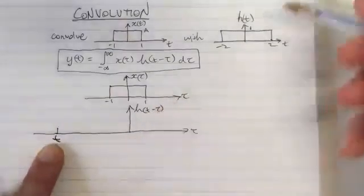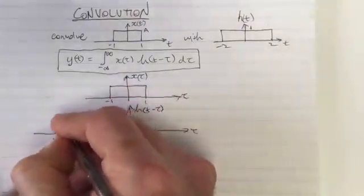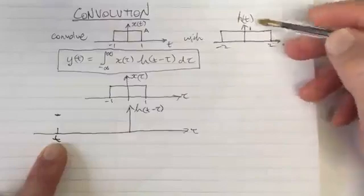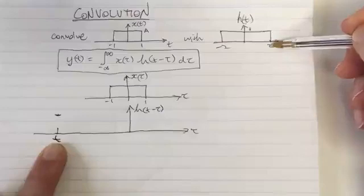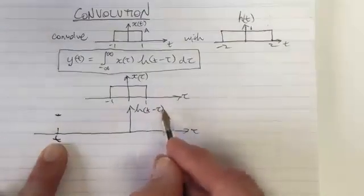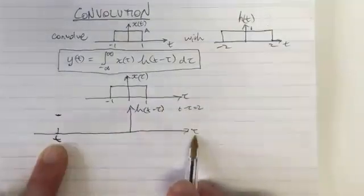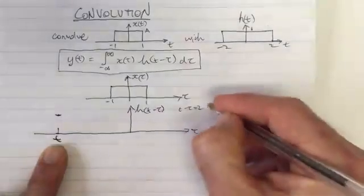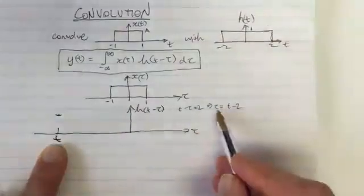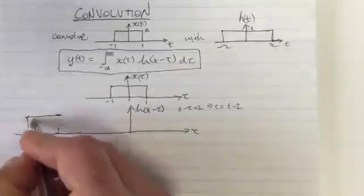h(0) is the centre of the square function, and it equals 1. So the centre of the square function sits above the point τ = t. Now where does the edge point go? When the argument of h equals 2, we need t minus τ = 2, so τ = t minus 2. So that edge of the plot has moved to τ = t minus 2.